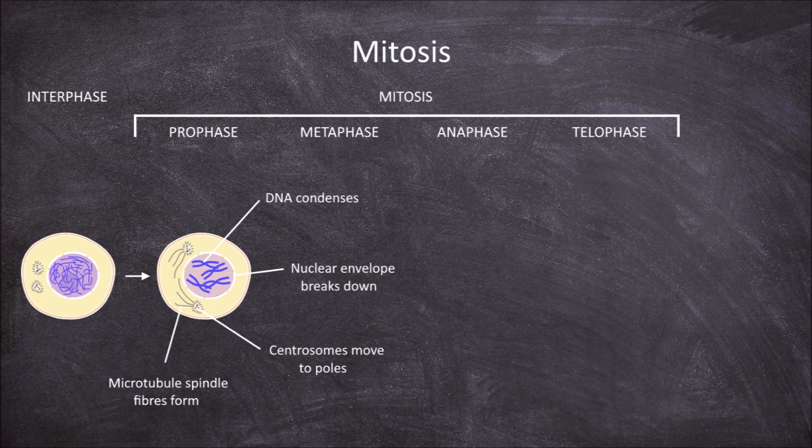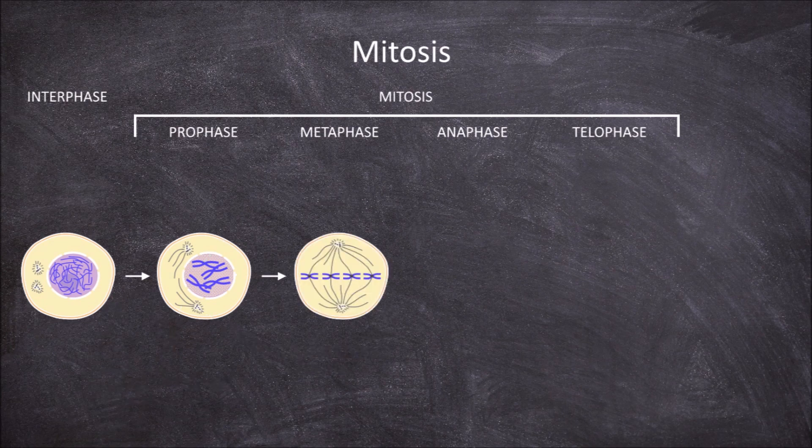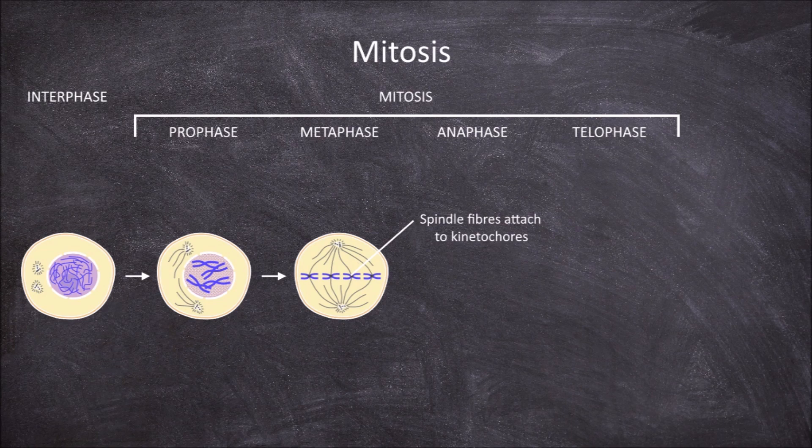The second phase of mitosis is metaphase. During metaphase, microtubule spindle fibres find and attach to the kinetochores. The kinetochore is a protein structure found at the centromere of a chromosome. The microtubule spindle fibres contract and pull at the kinetochores of different chromosomes, which cause the chromosomes to align along the middle of the cell along what is called the metaphase plate or equatorial plate.